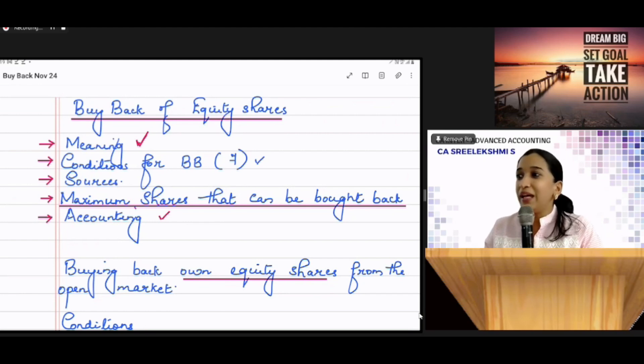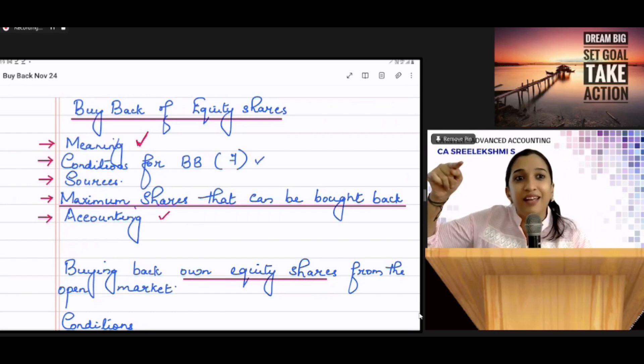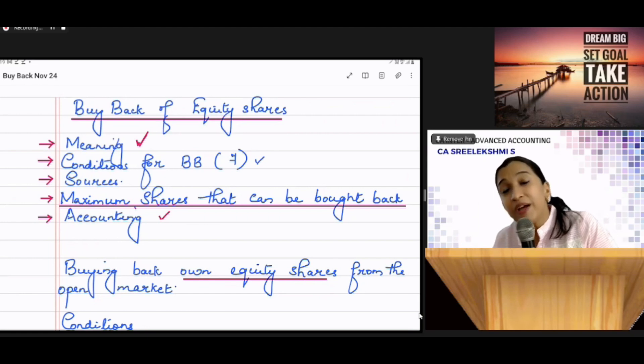It should be authorised by Articles of Association. Then resolution. Less than 10 percentage, what's resolution? Otherwise, you have to go for special resolution in general meeting.